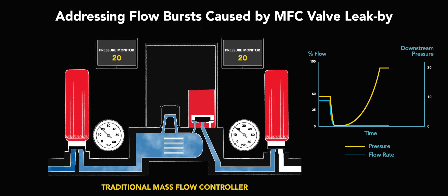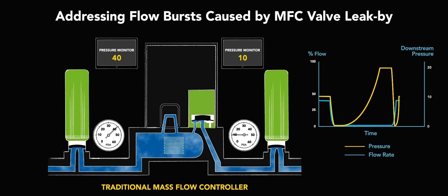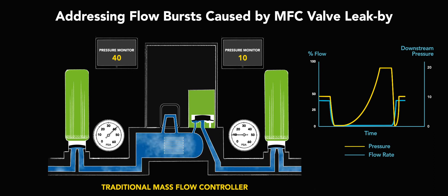During the first process setpoint, the pneumatic isolation valves are open along with the MFC valve, and the trapped volume of gas flows to the process chamber. All valves are open, and gas is flowing at a steady rate.